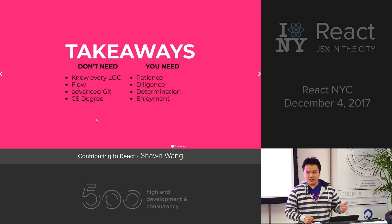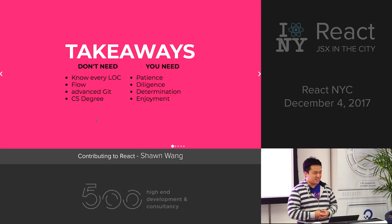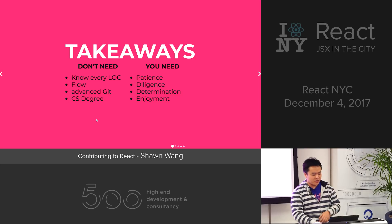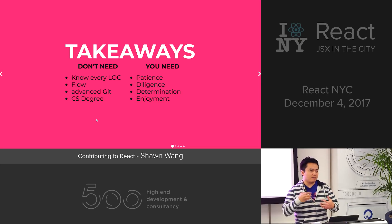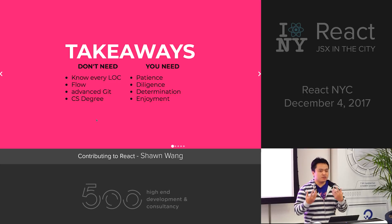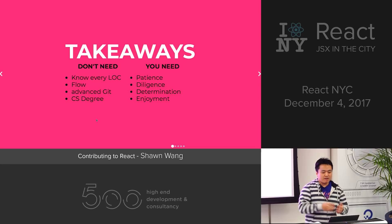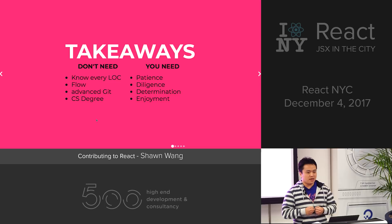Takeaways: You do not need to know every line of code in React. You do not need to know Facebook Flow, the type checking system. You do not need to know advanced Git, although it probably helps. You also don't need a CS degree — I don't have one. You do need patience — it took me about a month from beginning to end. You need diligence — checking every box so you don't waste time. You need determination — sometimes the specs change on you. When you join a repo, you're joining a community with established norms you might not know coming in, so don't be upset when they point out something that wasn't in the original spec.